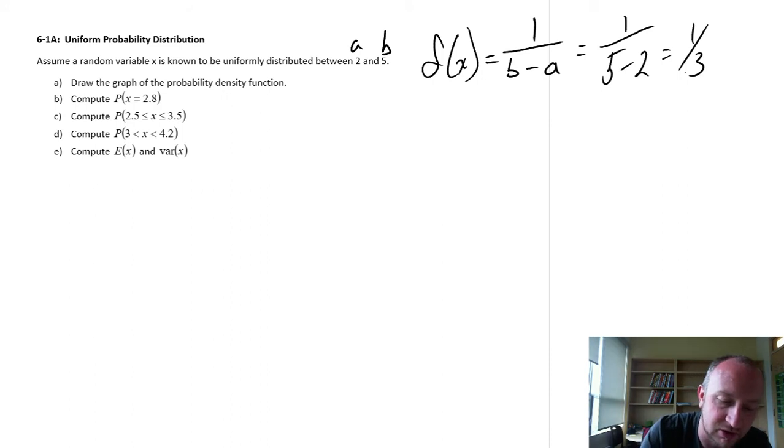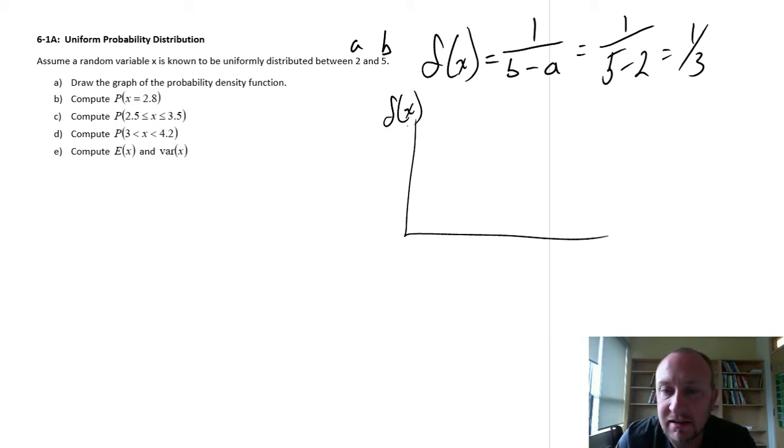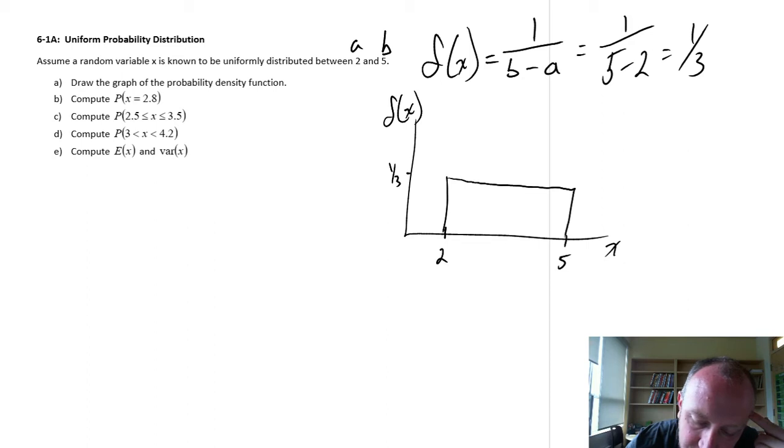When we're going to draw this for part a, here we have f(x) on that y-axis, and then along the x-axis are the different values that x can assume. x is limited to the values between 2 and 5, and f(x), the value of that probability density function, is 1/3. So we have a uniform distribution that looks something like this. There's our answer for part a, that's what our probability density function looks like.